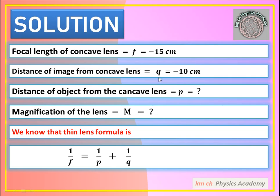The focal length is equal to minus 15 cm because a concave lens always forms a virtual image — imaginary image. So the focal length is negative. Also, the image distance is negative because the image is virtual, so we keep that as minus 10 cm. The distance of the object from the concave lens — we keep it as P — this we have to find out.